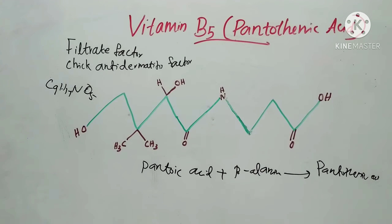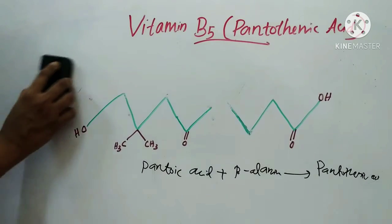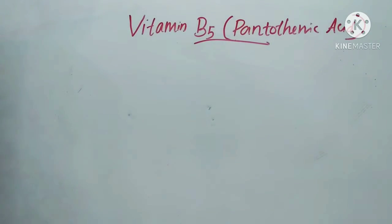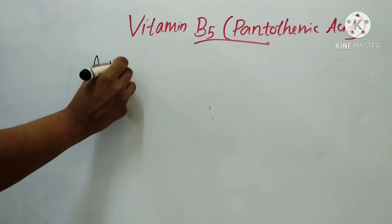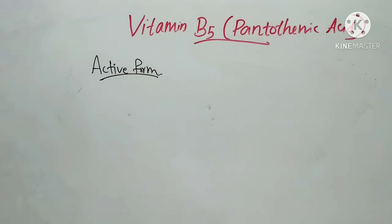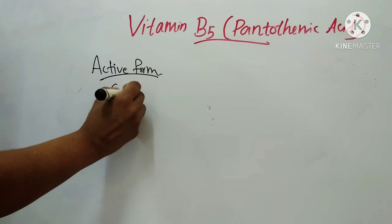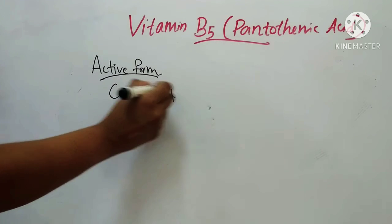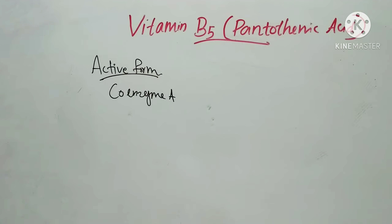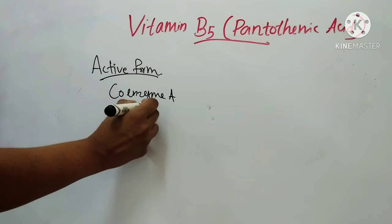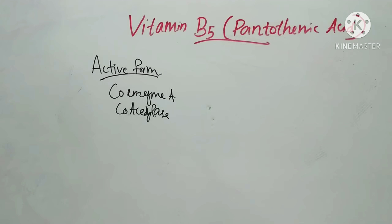We will now see its biological active forms. The active form of vitamin B5 is coenzyme A. In tissues, this vitamin is present almost entirely in the form of coenzyme A, also known as coacetylase. It is largely bound to proteins or apoenzymes, and is released from its combination by certain proteolytic enzymes, phosphatases, and a liver enzyme system.